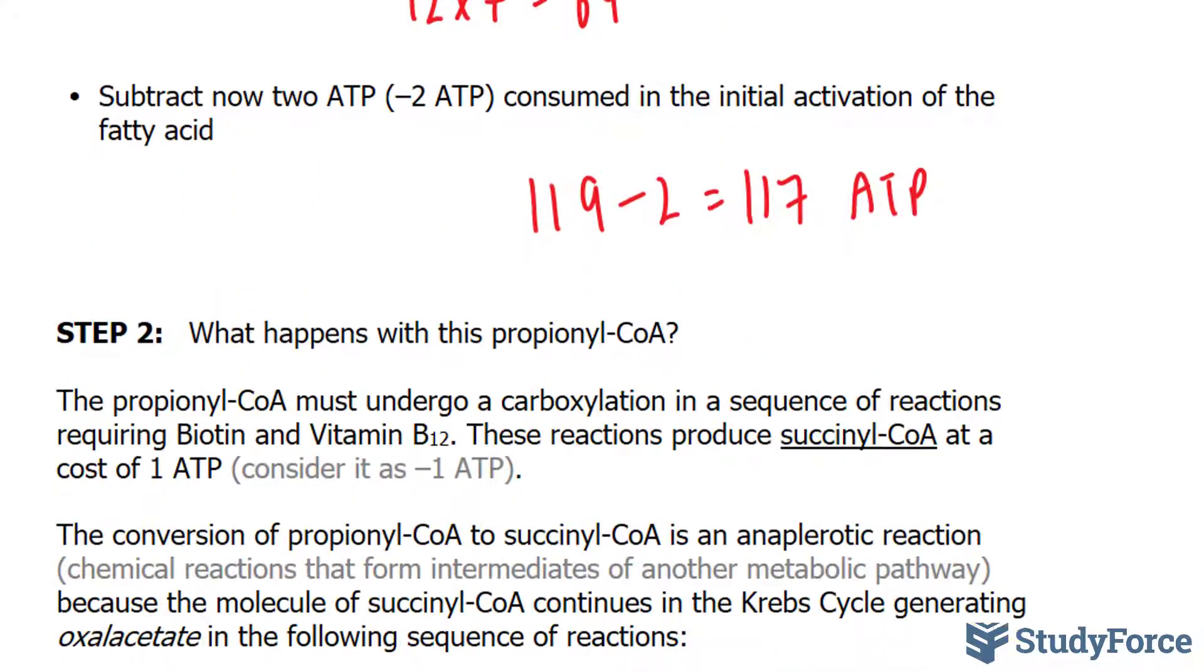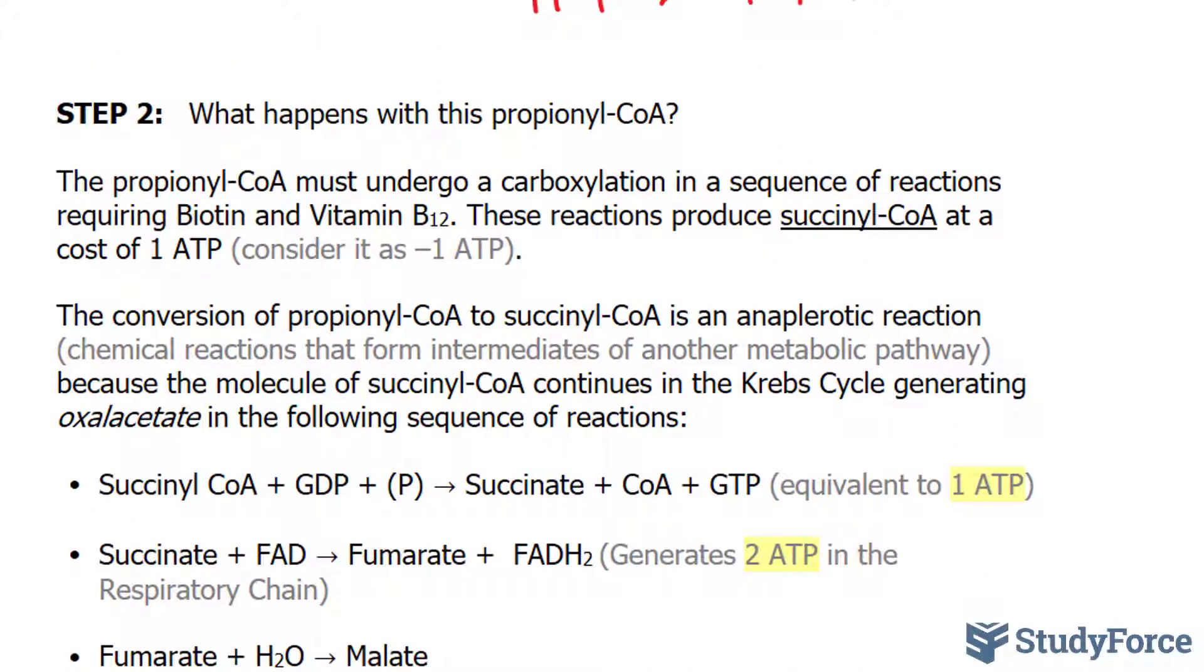You're probably wondering what happened to propionyl-CoA. The propionyl-CoA must undergo a carboxylation in a sequence of reactions requiring biotin and vitamin B12. These reactions produce succinyl-CoA at a cost of 1 ATP, considered as taking away 1 ATP from what we found earlier. The conversion of propionyl-CoA to succinyl-CoA is an anaplerotic reaction, which means that the formation of succinyl-CoA is an intermediate to another metabolic reaction downstream.